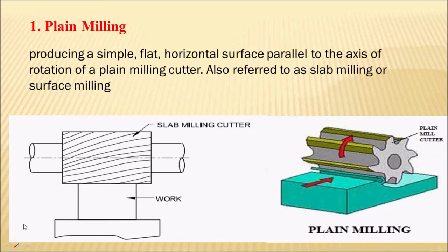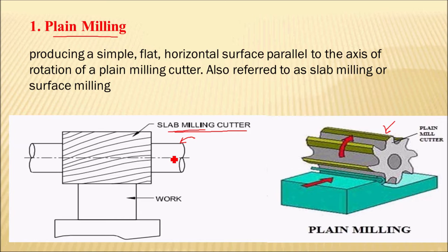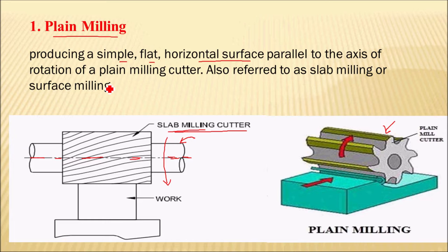The first operation is the plain milling operation, also called slab milling. Here you can see a setup for plain milling in this image. A plain milling cutter or slab milling cutter is used, which is mounted on an arbor or spindle and rotated by the spindle. Plain milling is a simple operation that produces a flat and horizontal surface which is parallel to the axis of rotation of the cutter.